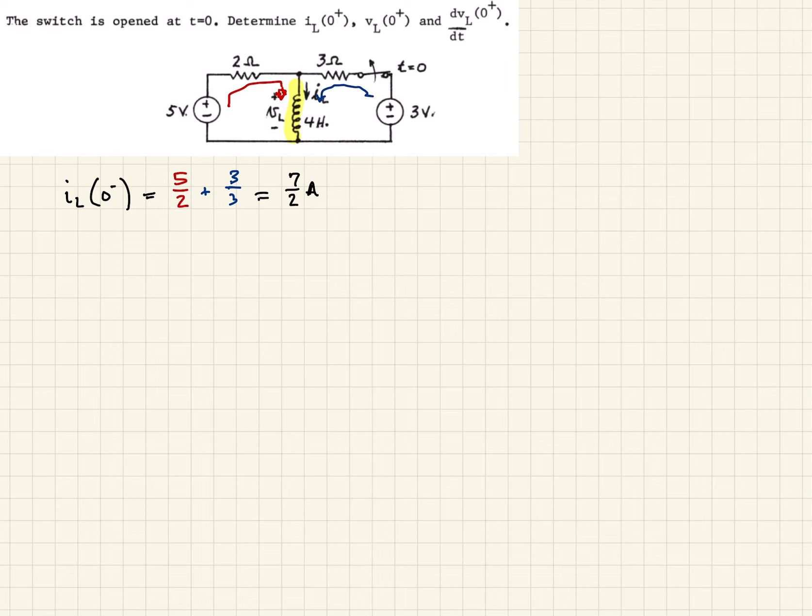7 over 2 amps. But we know that for an inductor, you cannot have instantaneous change in the current. So therefore, IL at 0 minus has got to equal IL at 0 plus. So in this case, that will be our current flow in the inductor at the instant the switch opens.